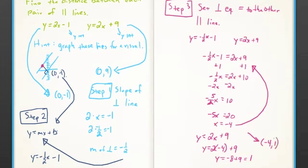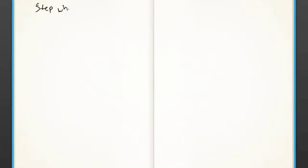Now I have my second point, which is (-4, 1). And I'm going to use that point and (0, -1). Oops, I circled the wrong one. (0, -1) and (-4, 1) to find the distance between those.